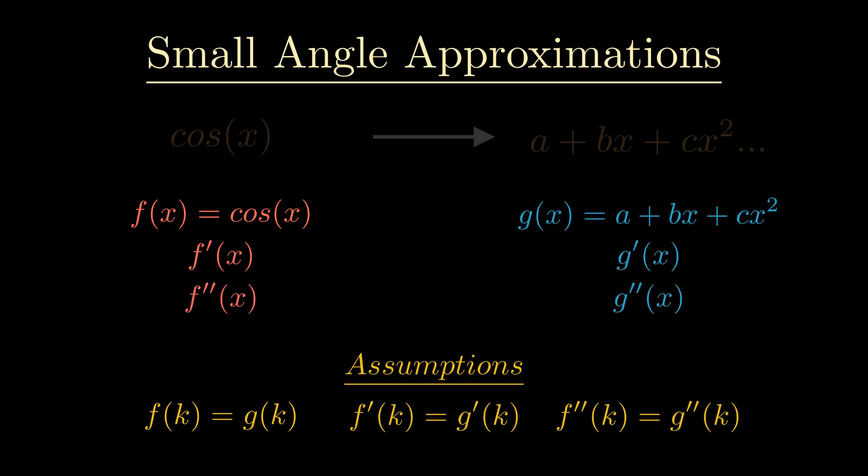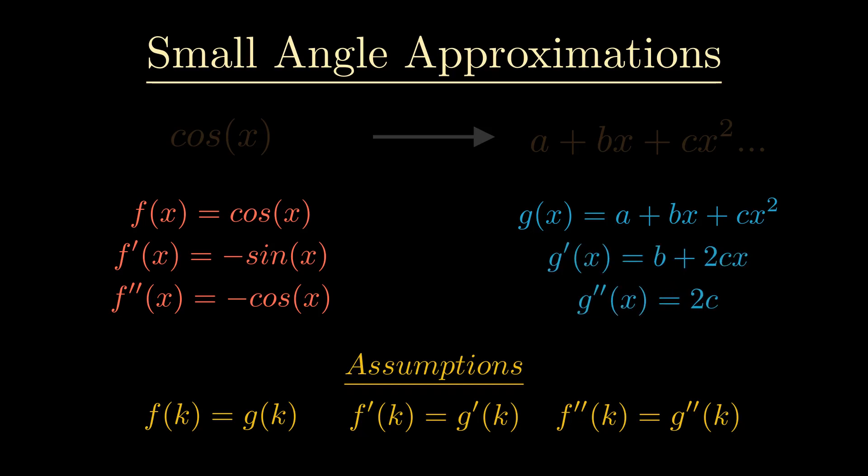When we differentiate cos we get negative sine, and when we differentiate negative sine we get negative cos, which is something we proved in my last video. On the right we will use the power rule. Something fundamental you may have noticed is that in the derivatives of our model there is only ever a single constant term. From earlier we know that the derivatives of both of the functions at a given point need to be equal, so let's just say that point is zero.